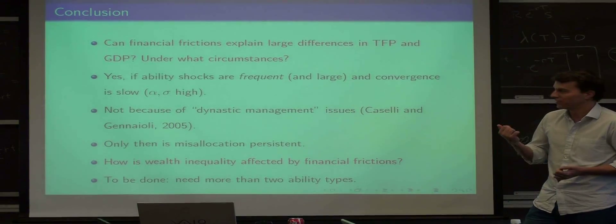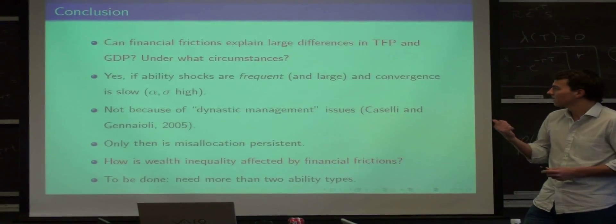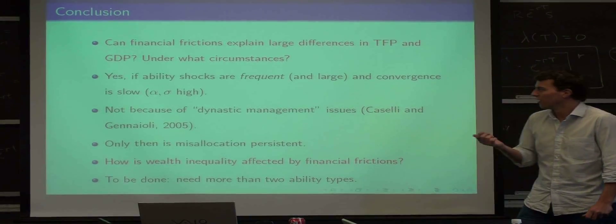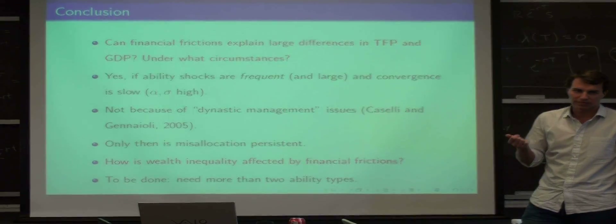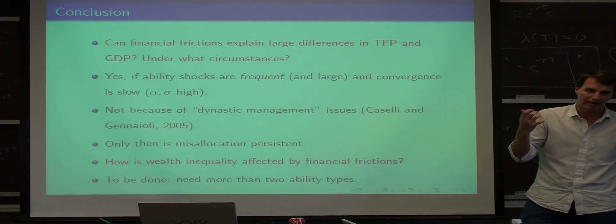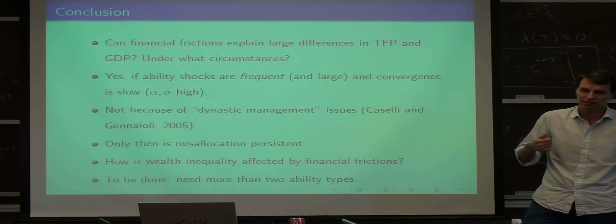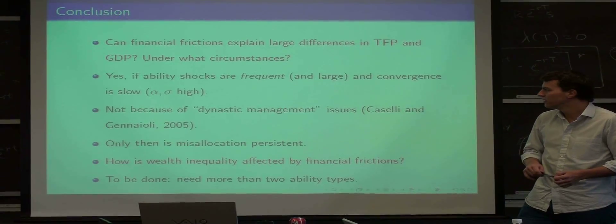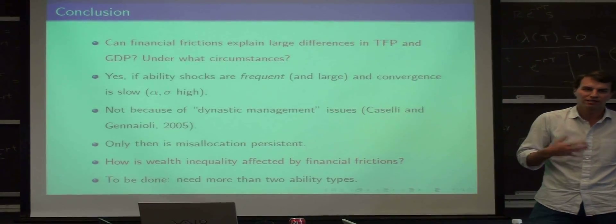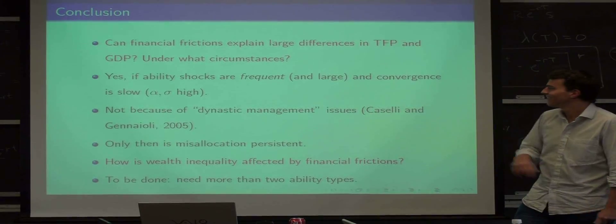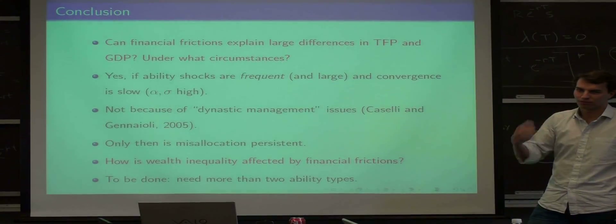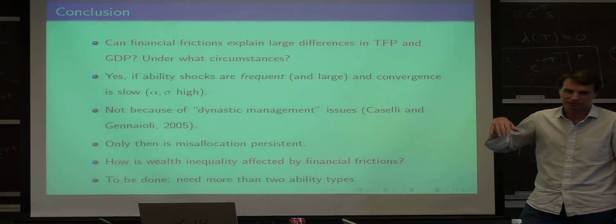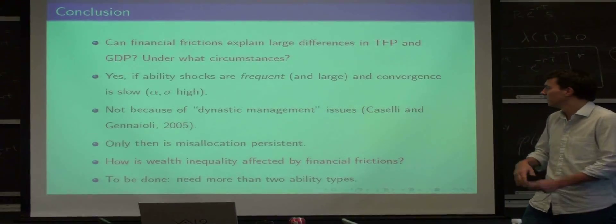So, in the beginning I asked, can financial frictions explain large TFP differences and GDP differences, and under what circumstances? In particular, can you explain high capital misallocation on the intensive margin? And the answer is yes, if ability shocks are frequent enough, and convergence, so saving up out of these borrowing constraints, is slow enough.